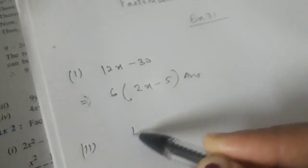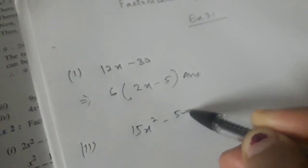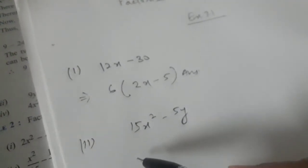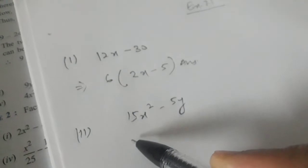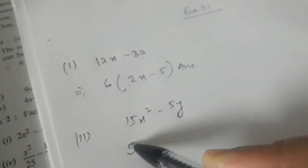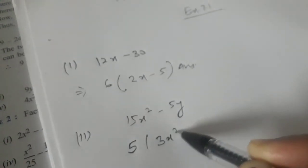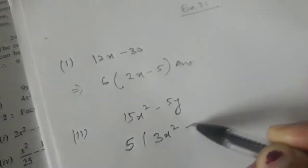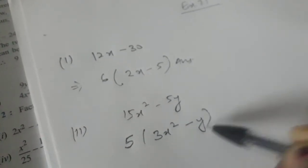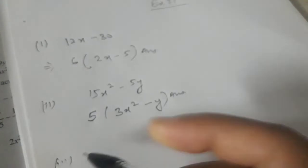The second part is 15x² minus 5. Taking 5 as common, we get 5(3x² minus 1) as our answer.